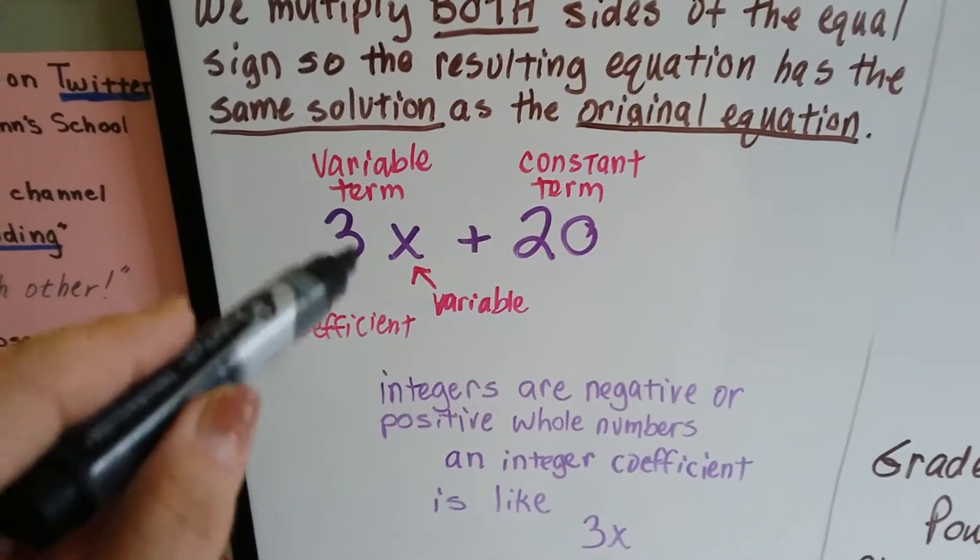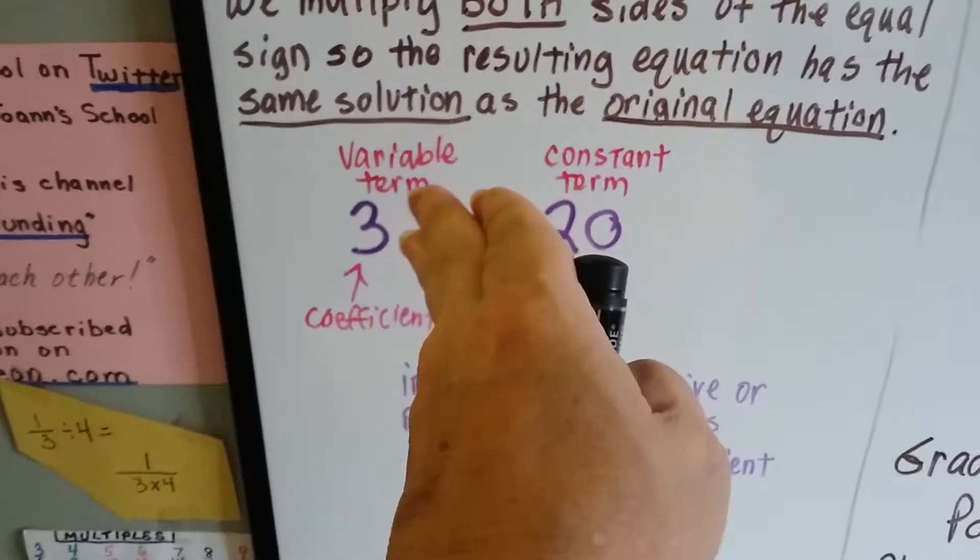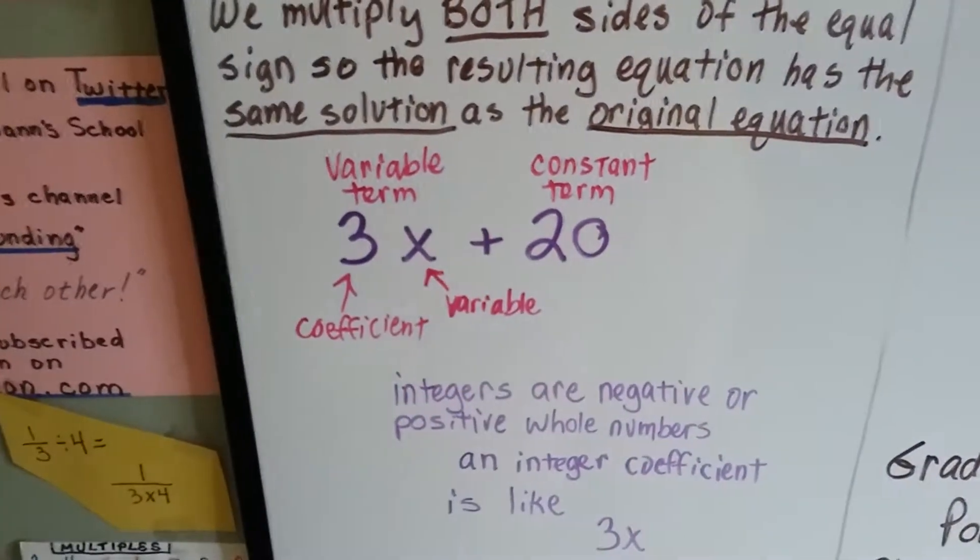This is a coefficient. It's next to the variable. If the variable leaves, it's just a stand-alone number. It's not a coefficient anymore.